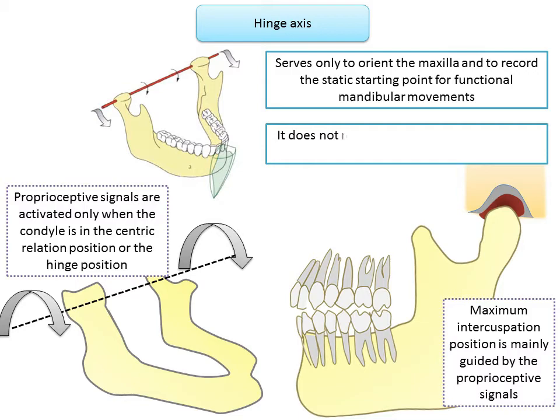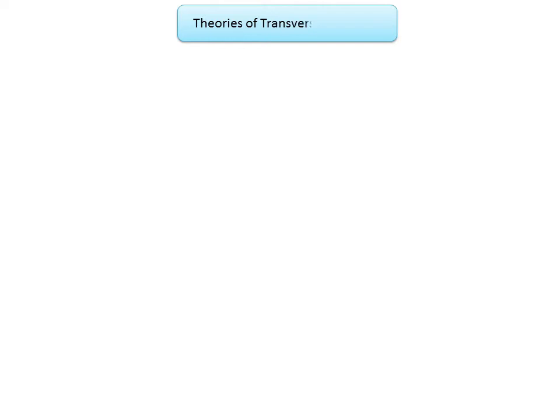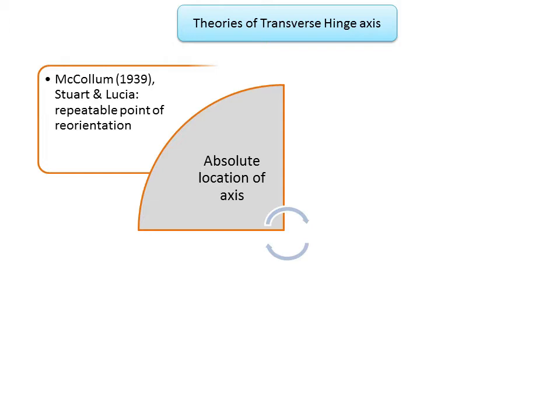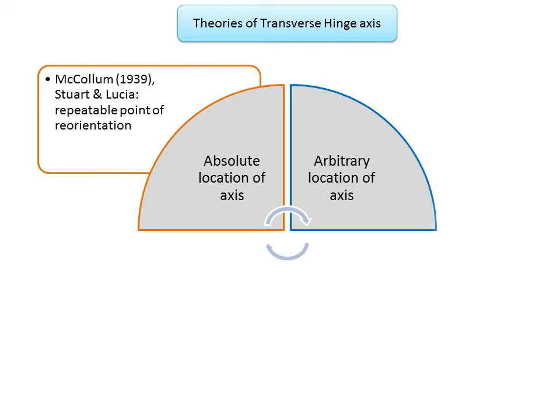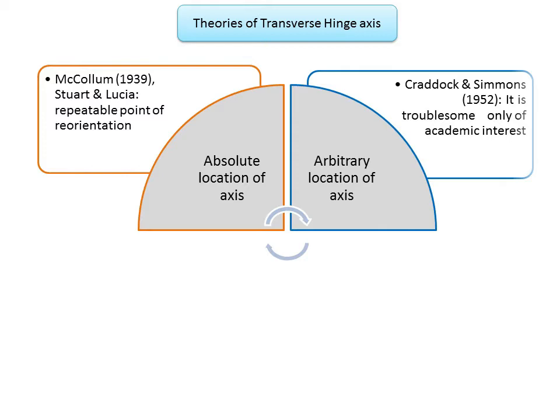Different theories of transverse hinge axis have been proposed over the years, yielding four main schools of thought. Group one — absolute location of the axis: these believe there is a definite transverse axis that should be located as accurately as possible. McCullum, Stewart, and Lucia believe the hinge axis is a component of every masticatory movement and cannot be disregarded. Group two — arbitrary location of the axis: this group believes arbitrary location is not worth the added effort; Craddock stated the search for the axis is of no more than academic interest.